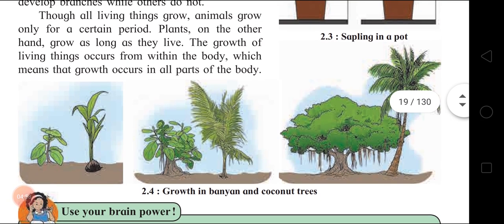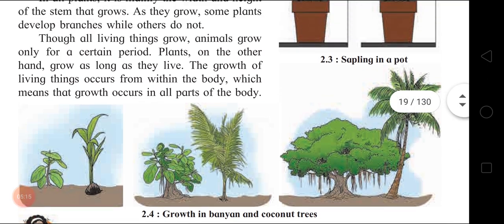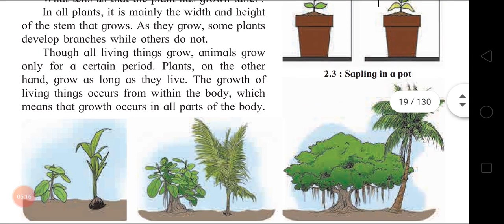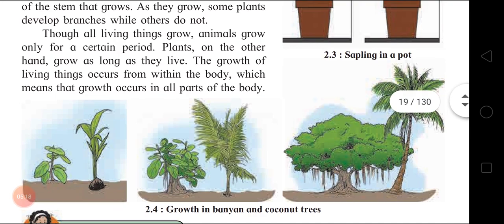See the growth in banyan and coconut trees - they grow as long as they live. After they are cut or when they die, otherwise they grow and grow. But human beings have a limited period.